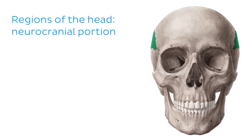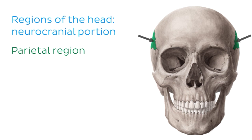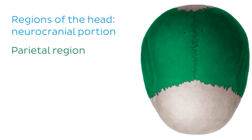The next region is the parietal region, which refers to the area on either side of the head that overlies the parietal bones of the skull, as indicated by the arrows. Viewing the skull from above, we can see the parietal bones much more clearly and that they are roughly square in shape.